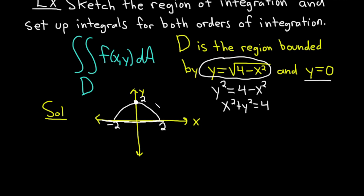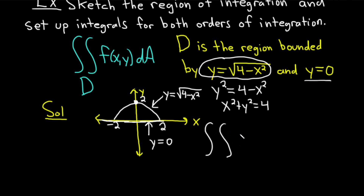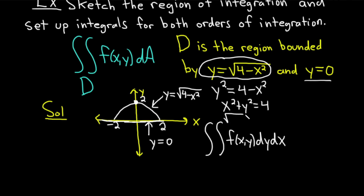Using this picture, the top function is y equals the square root of 4 minus x squared and the bottom function is y equals 0. For the order dy dx, we want the functions of x on the inner integral — think of it as top minus bottom. So the square root of 4 minus x squared is the upper limit of integration, y equals 0 is the lower limit, and from the graph x varies from negative 2 to 2. That gives us our first order of integration.